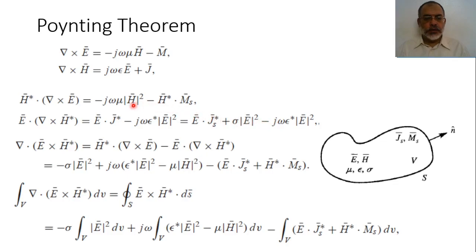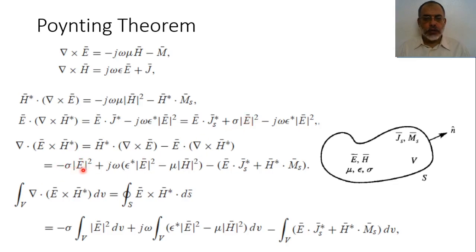Taking the divergence of E cross H conjugate, this can be simplified as H conjugate dot curl E minus E dot curl H conjugate, which corresponds to these two terms. So the divergence of E cross H conjugate equals -j·omega·mu·|H|² - H conjugate dot J_source - E dot J_source - sigma·|E|² + j·omega·epsilon*·|E|².